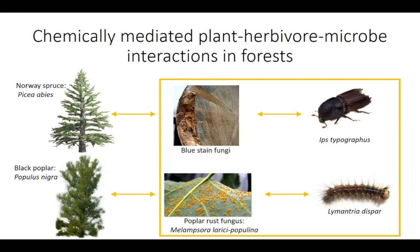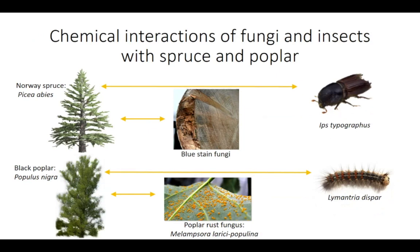Poplar is infected with the rust fungus Melampsora larici-populina on an annual basis, causing a severe leaf disease. Because this disease recurs every summer, the chances are quite high that the Gypsy Moth caterpillars will encounter this disease when feeding on poplar. My two colleagues will focus their presentations specifically on these interactions. To put their work into a bigger context, I will quickly introduce the direct chemical interactions of these insects and fungi with their respective host trees.